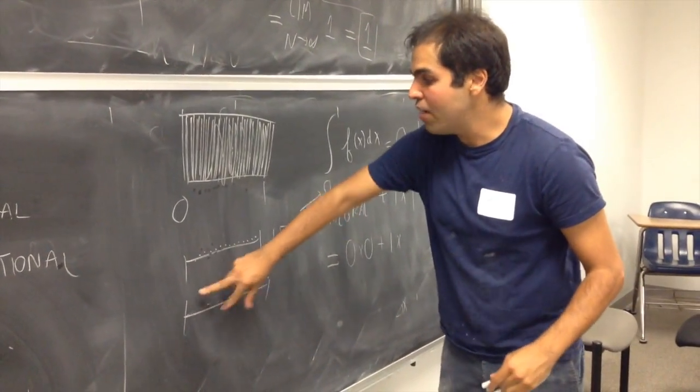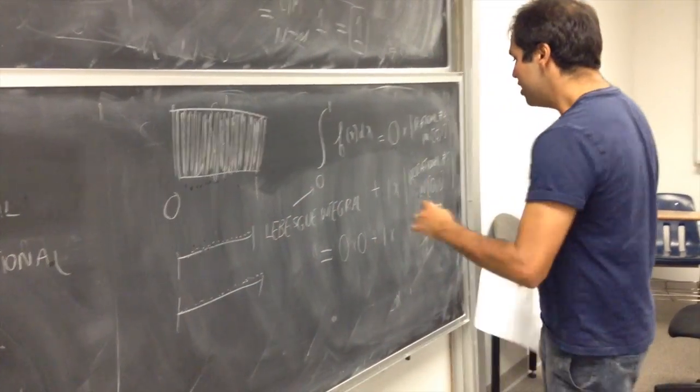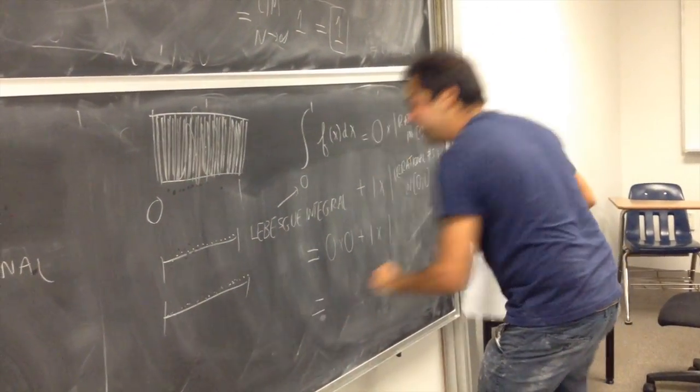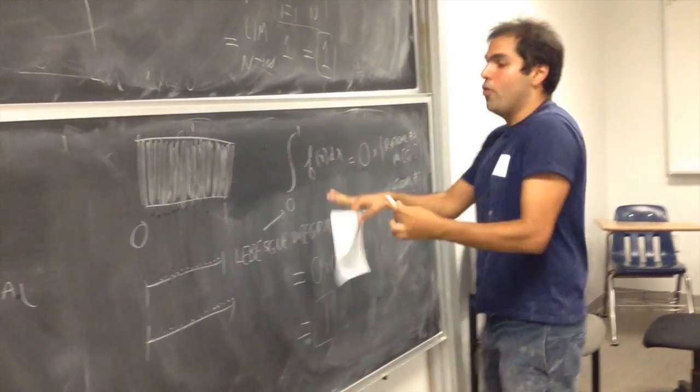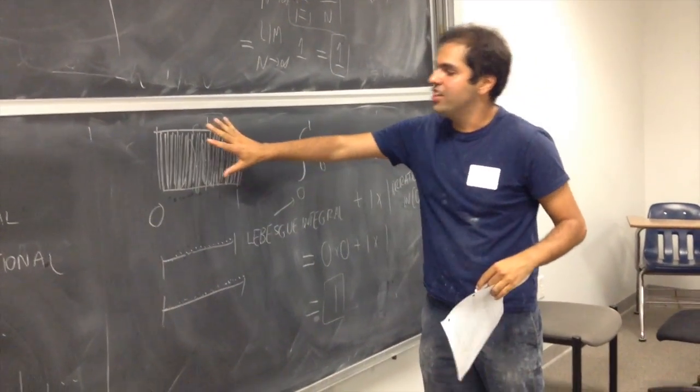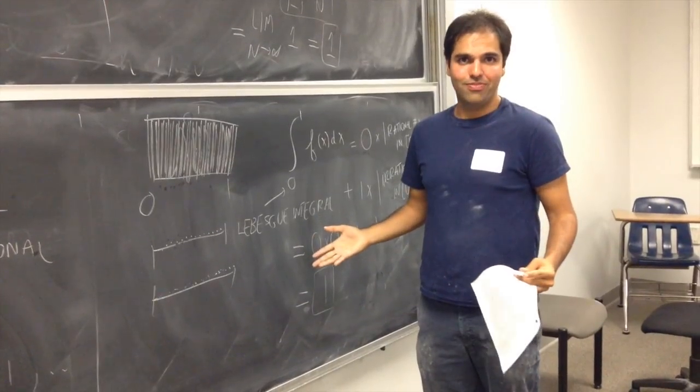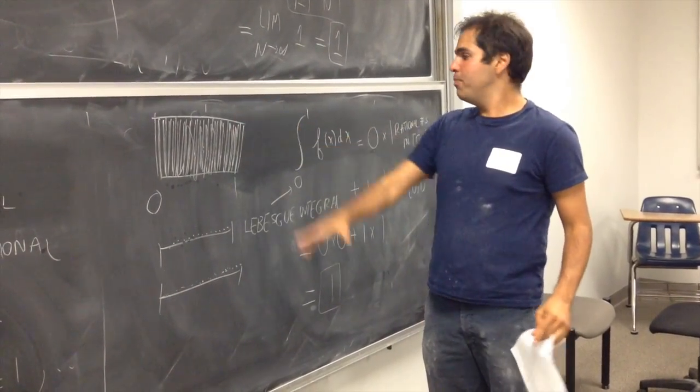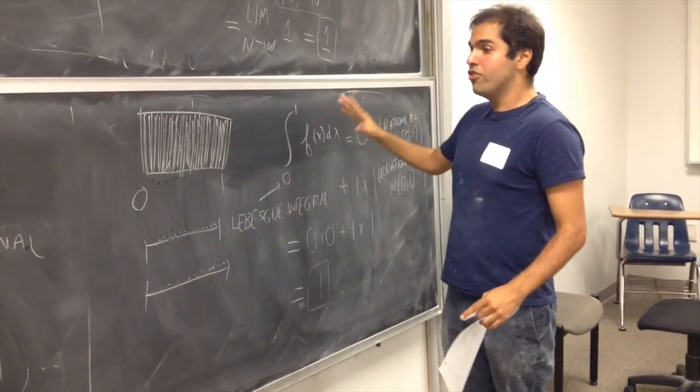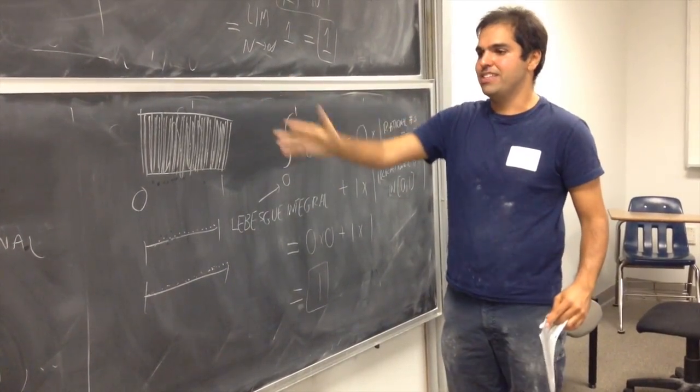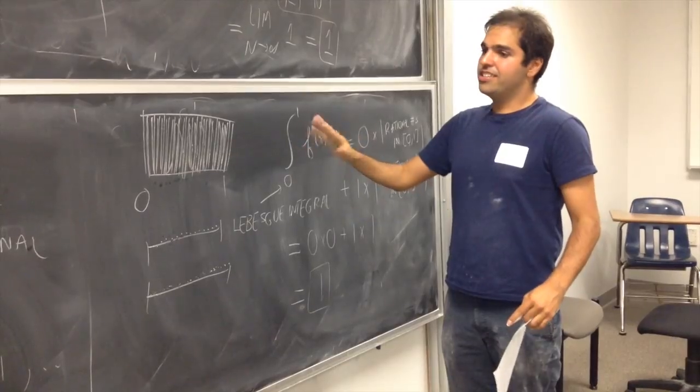So, the measure of the irrational numbers in 0, 1 should be 1. So, by definition of this Lebesgue integral, the actual correct area under this function is actually equal to 1. And, this was for simple functions, but it turns out, for general function, we can approximate those by simple functions. And, it's kind of cool.